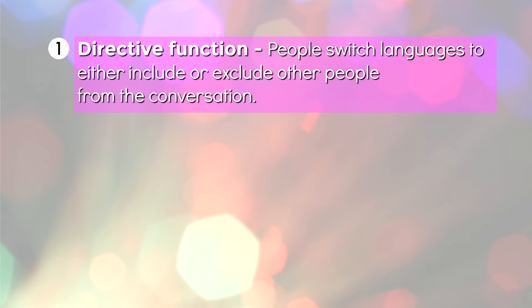Number one, directive function. People switch languages to either include or exclude other people from the conversation. Maybe you want to tell secrets so you switch to a language that the people around you don't understand. Or maybe the opposite, maybe you want to end a private conversation and re-engage with the people around you so you switch to a language that they do understand.